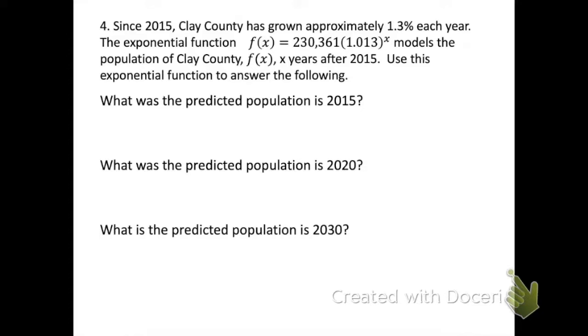Something that's really important about this problem is our x value. X stands for the number of years after 2015. So first, we're asking what is the predicted population in 2015? So in 2015, x would be 0, because 2015 is 0 years after 2015. So let's plug 0 into the equation for x. And maybe you already could have guessed this, but our answer is just 230,361 people. It was in our initial value spot, it was where A goes, so we probably could have guessed that.